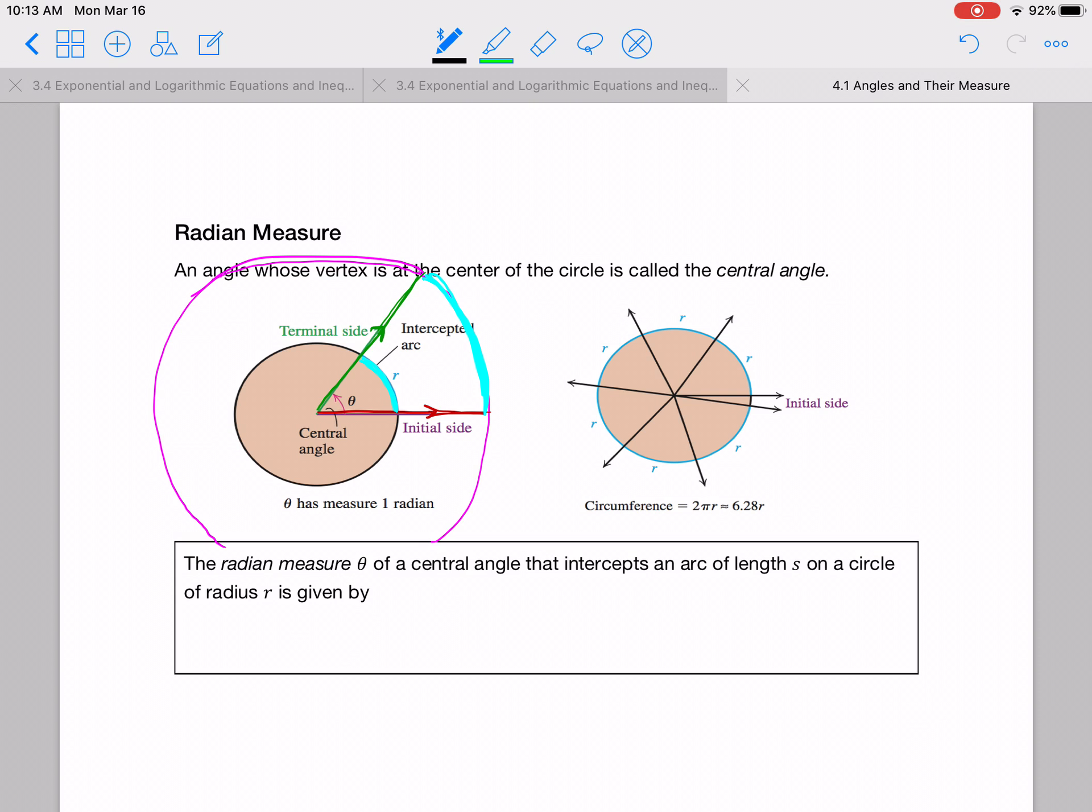The radian measure of a central angle that intercepts an arc of length S, which is the variable we typically use for arc length, on a circle of radius R, is given by theta, the angle in radians, equals the arc length over the radius of the circle. And keep in mind, this formula only works in radians. If you use this in degrees, you are likely to get it wrong. So this only works in radians.